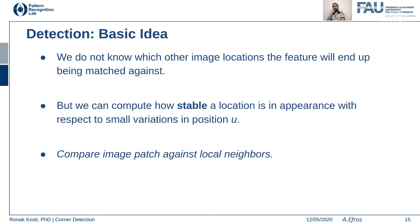When you think about this stability property, corners come out as a natural consequence. With an edge, if you move along the edge you can easily find the same features. But with corners, movement in any direction yields significant change — you can't easily find similar features nearby. Therefore corners become very good feature points, and it's important to recognize these characteristics before proceeding to detection.